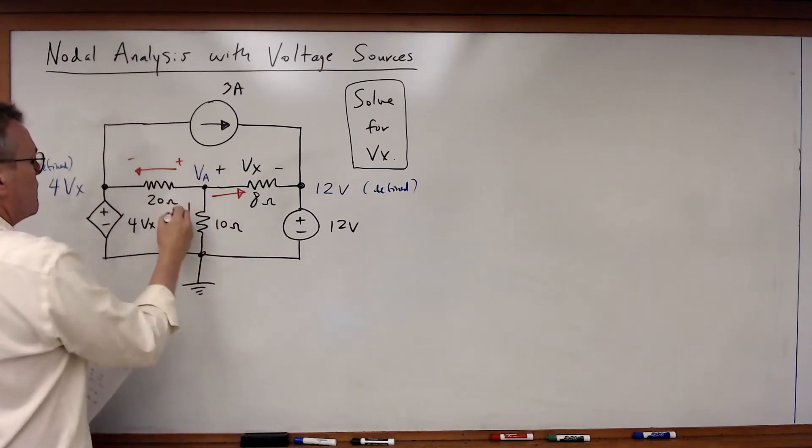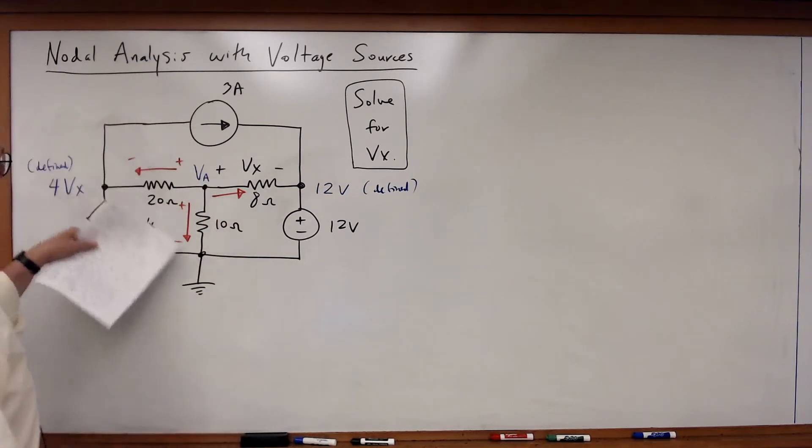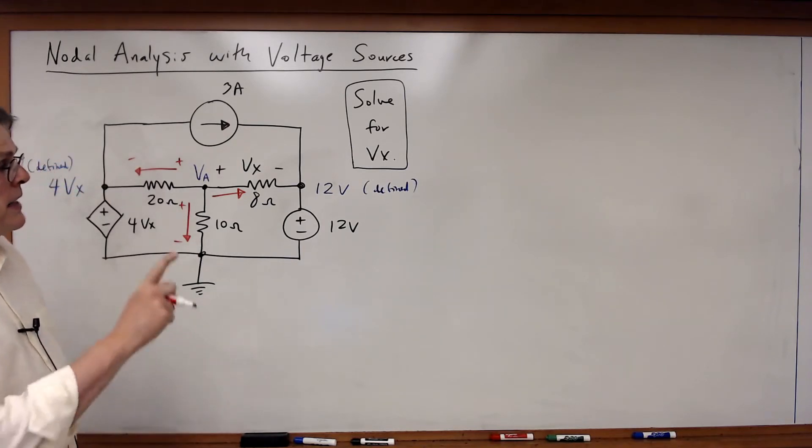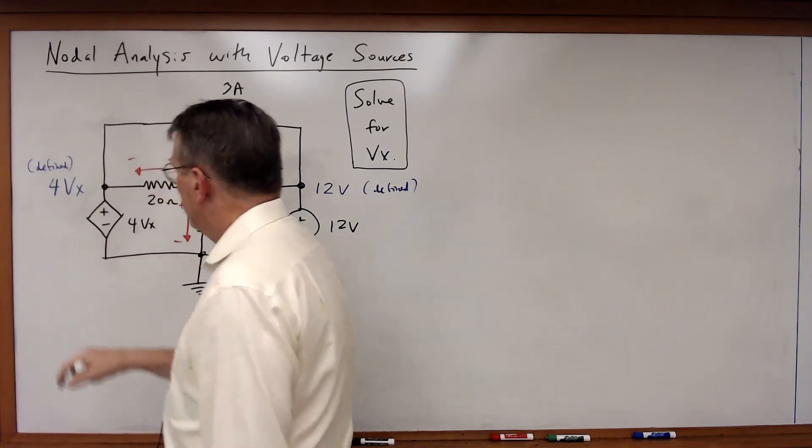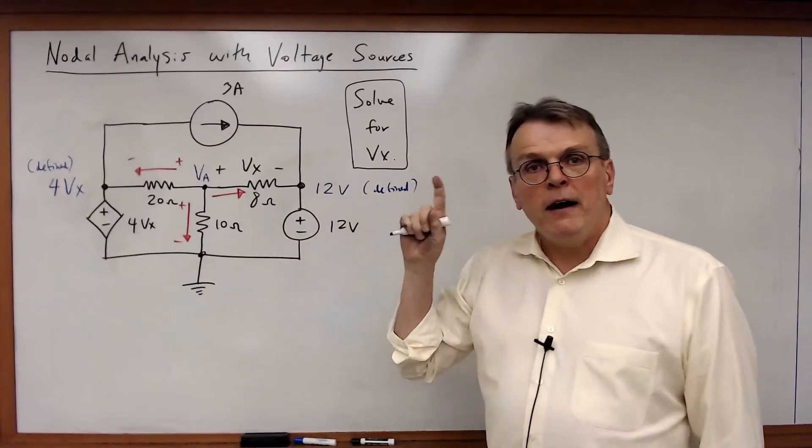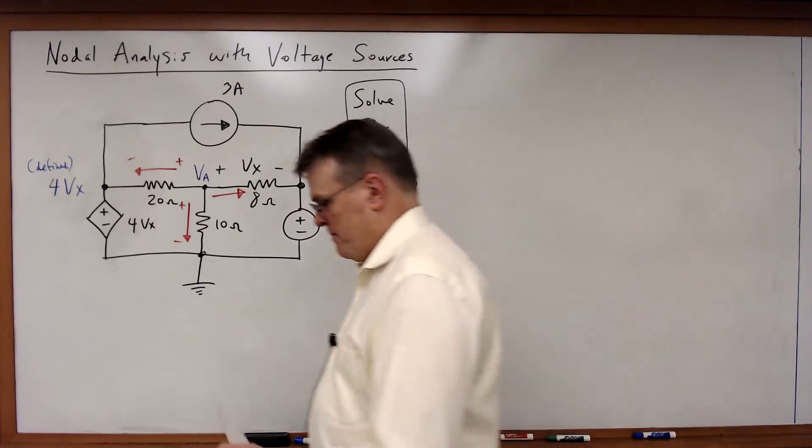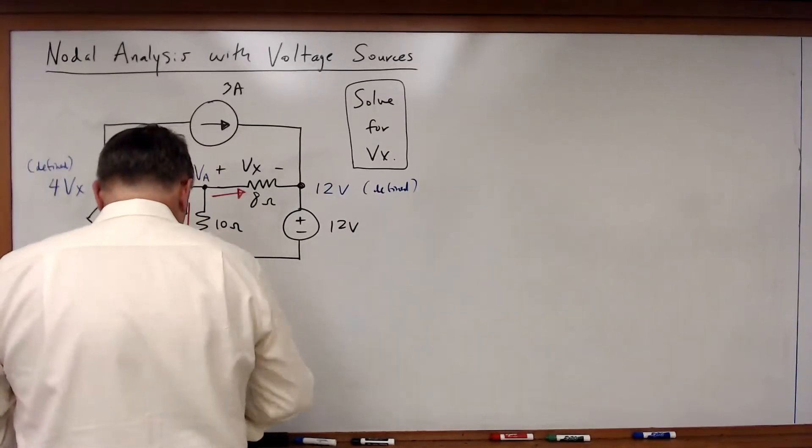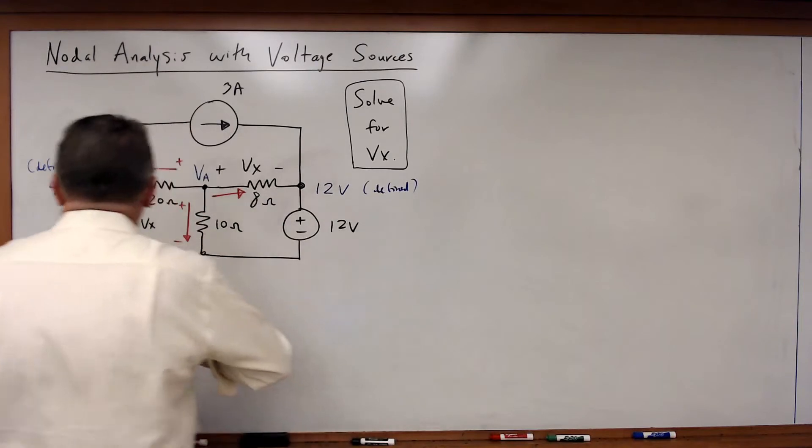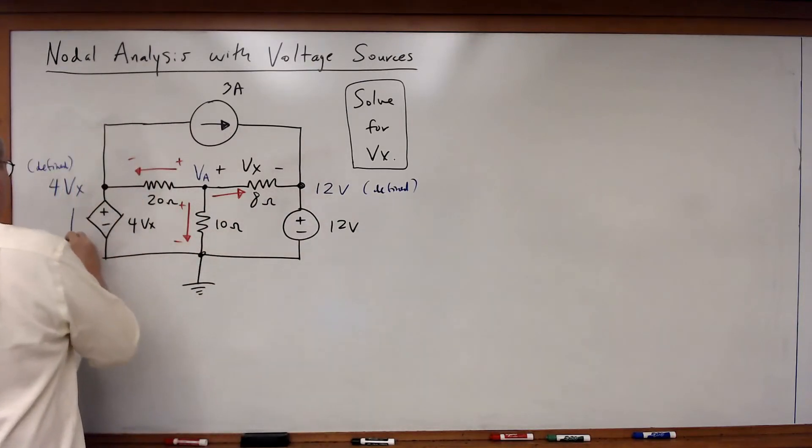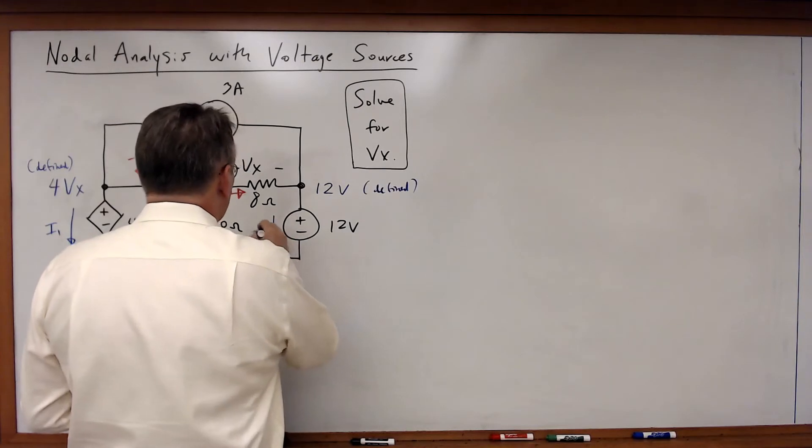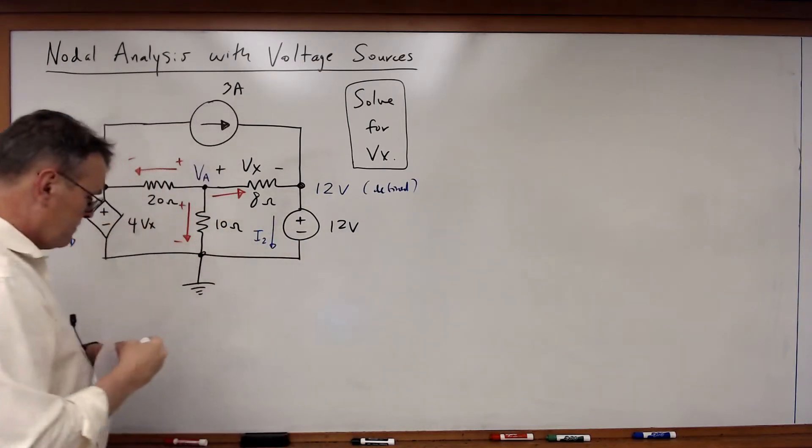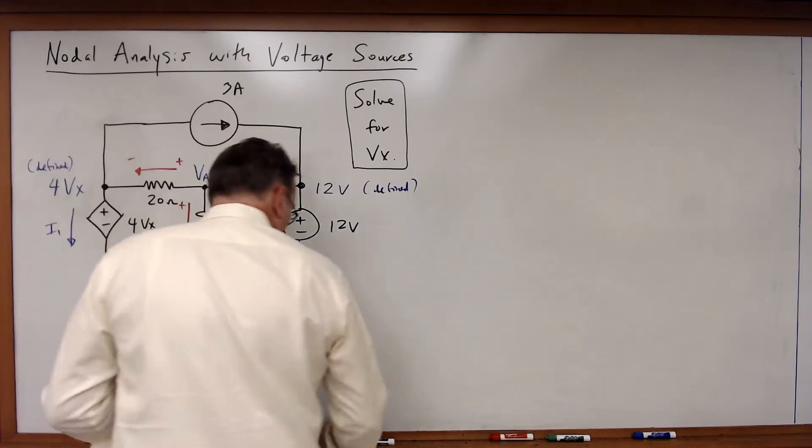Okay, so given this I can now go through, I can add my polarities of the voltage drops across those resistors. Now in addition I want to point out that since I've got two voltage sources here, I need to define the unknown currents through them. So in this case I'm going to call this current I1, I'm going to call this current I2.